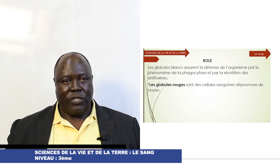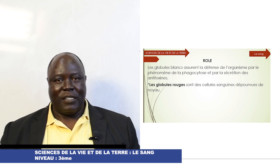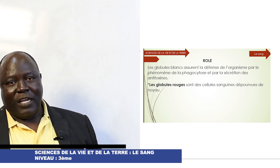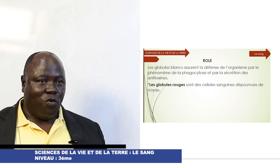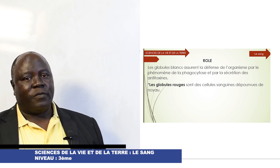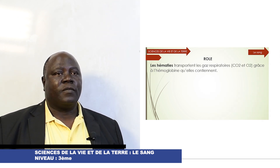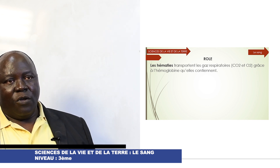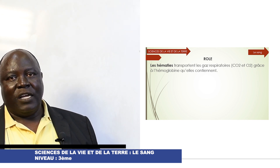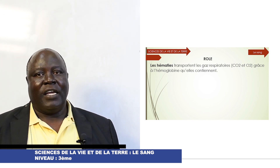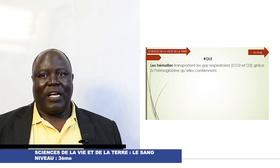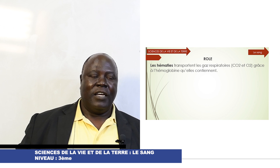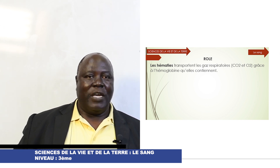Les globules rouges ou hématies sont des cellules sanguines dépourvues de noyaux, c'est-à-dire qu'ils n'ont pas de noyaux. Quel est leur rôle ? Le rôle des globules rouges est de transporter les gaz respiratoires, le dioxyde de carbone et le dioxygène, grâce à l'hémoglobine qu'ils contiennent.